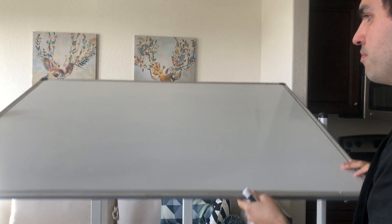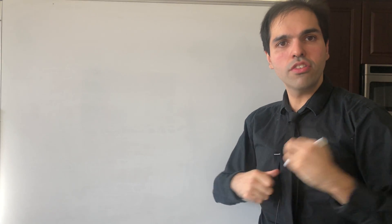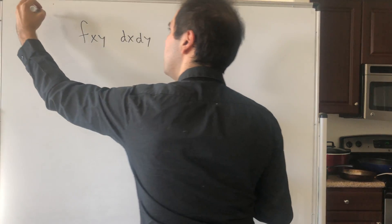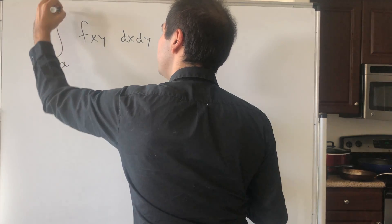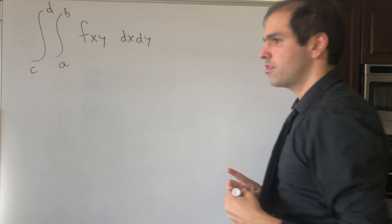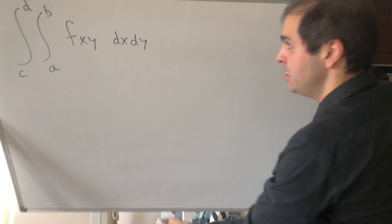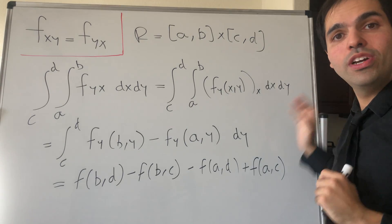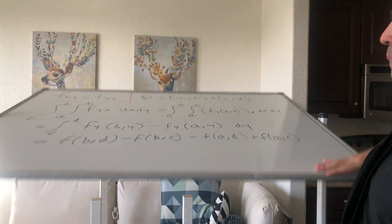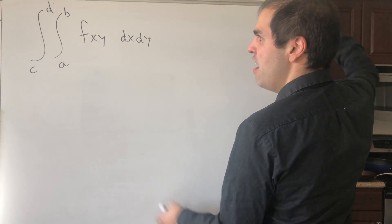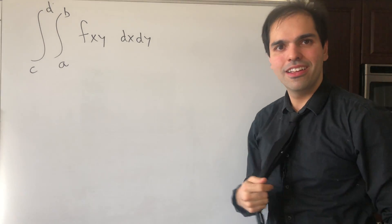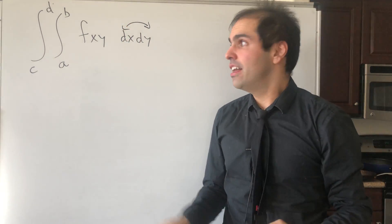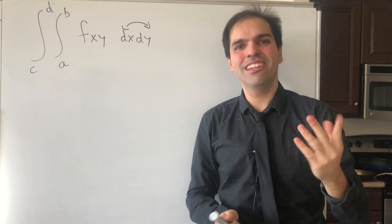Let's integrate f_xy dx dy from a to b and c to d over the rectangle. Now, looking at the previous case with f_yx, what was nice is that we had f_yx dx dy, to which we could directly use the fundamental theorem of calculus. But here the order seems wrong because we have f_xy dx dy. If only we could interchange this dx and dy, then we would be pretty much done because we would just repeat the other case.